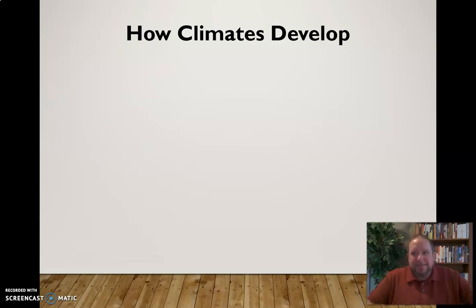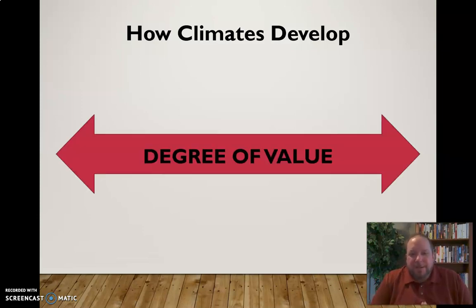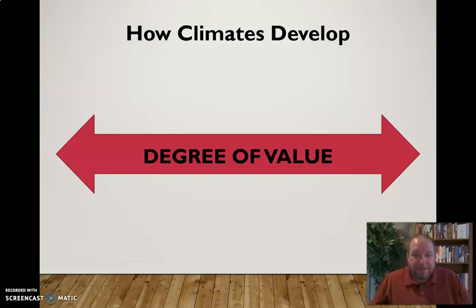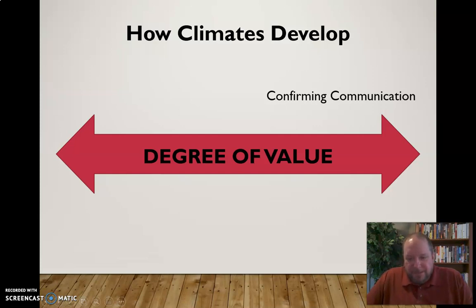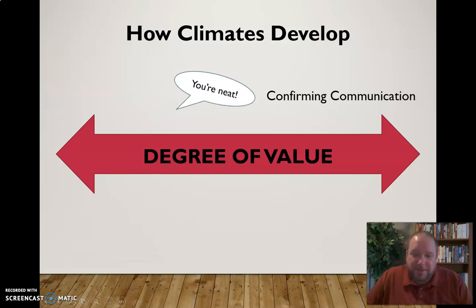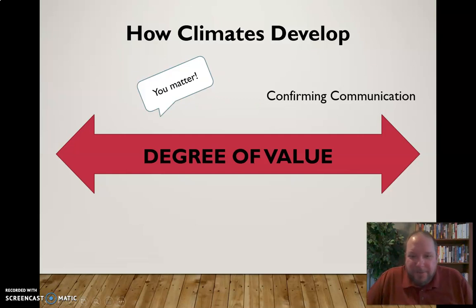These climates develop largely through our communication with the other person. The communication climate has to do with how we value that person and how we express that value. On one end of a continuum we have what we call confirming communication — messages that confirm that person's value to us. Messages like 'I like you,' 'you're neat,' 'you matter' are types of confirming communication that indicate we value that person.